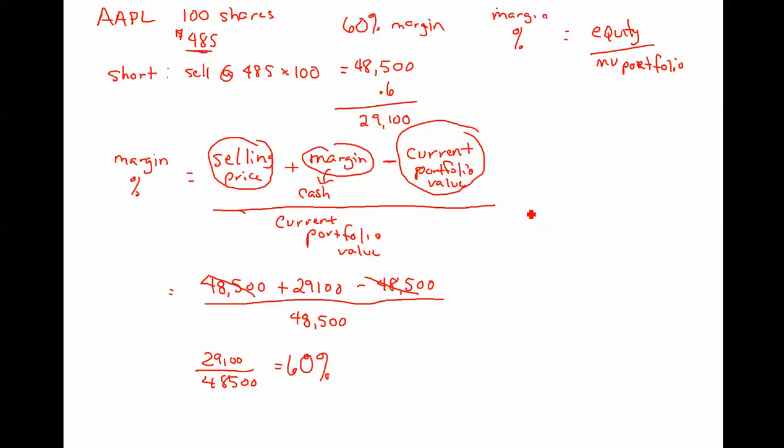Let's say the value of Apple declines to $400. I'll do that in blue. If the value of Apple drops, that is good for us because we've just shorted Apple at 485. So we've locked in our selling price of 48,500. And if the price drops, then I can buy it at a cheaper value, which would boost my equity.